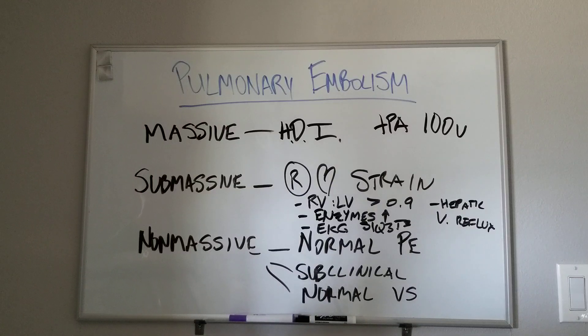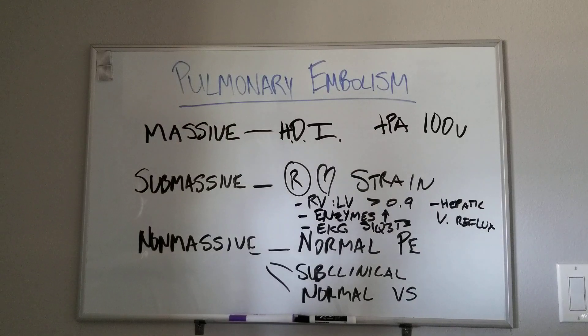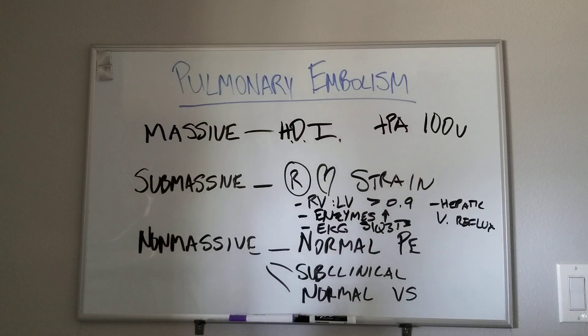For non-massive, you just need to anticoagulate them three to six months, depending on which guidelines you look at and depending on whether this is their first or second PE, provoked or unprovoked, et cetera.